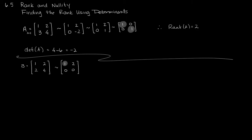It would be easy to look at this reduced matrix and say there's one pivot and therefore the rank must be 1, but we're not quite ready to go there yet. I can also say that the determinant of B is 4 minus 4, which is 0. The fact that this is 0 tells me something about the dependence of the rows, but it does not tell me the rank is 0 or 1. What it tells me is that I have to keep going, because this determinant hasn't given me enough information by itself.